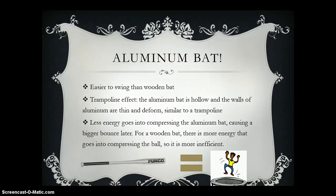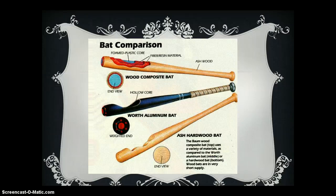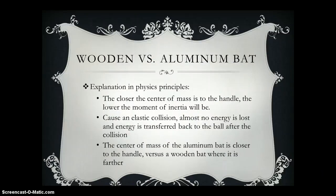For a wooden bat, more energy goes into compressing the ball, so it's more inefficient. This picture shows how the aluminum bat is hollow on the inside versus the wooden bat, and there's also a third type called the ash hardwood bat. In physics terms, the closer the center of mass is to the handle, the lower the moment of inertia will be. That causes a more elastic collision when the ball and bat hit, so almost no energy is lost, and energy is transferred back to the ball — which is the advantage of the aluminum bat.